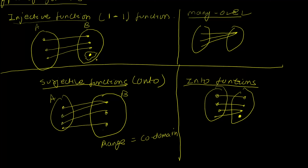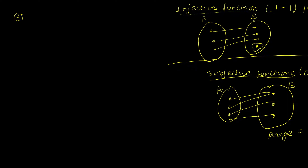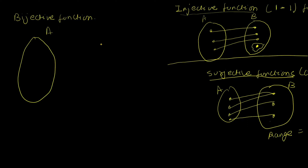Something special happens if we combine the ideas of surjective and injective functions. A bijective function is one that is both injective and surjective. If I have input space A and output space B, injective means no two inputs share the same output, and surjective means no element in the co-domain is left unmapped. Ensuring both properties gives us a one-to-one correspondence.